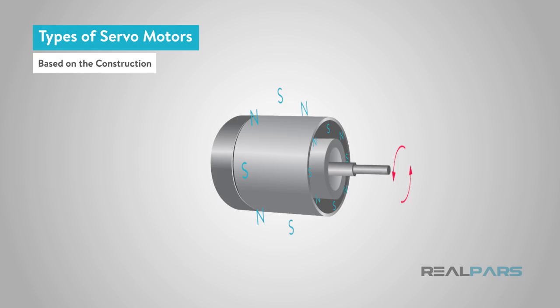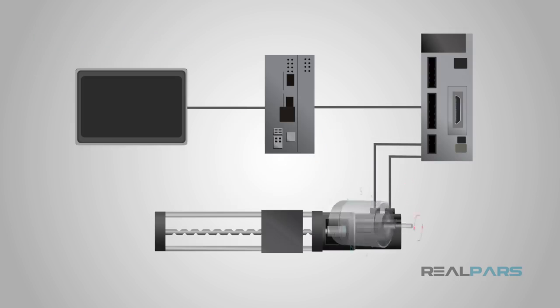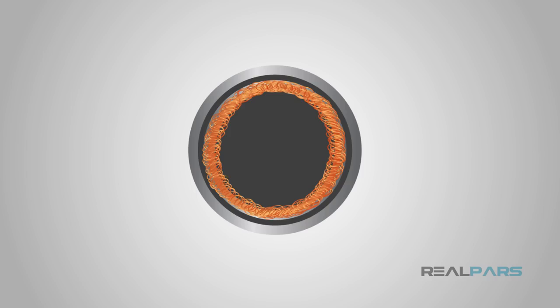With this permanent magnet rotor, no rotor current is required, so when the stator field de-energizes and stops, the rotor also stops. These motors have higher efficiency due to the absence of rotor current. When the position of the rotor with respect to the stator is required, an encoder is placed on the rotor and provides feedback to the servo motor controller.